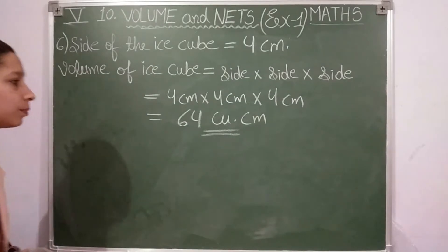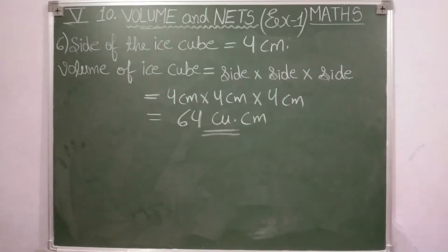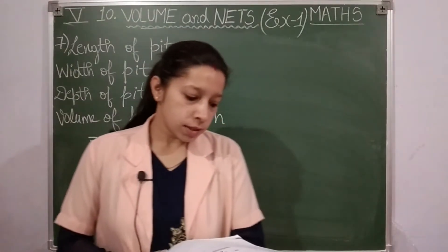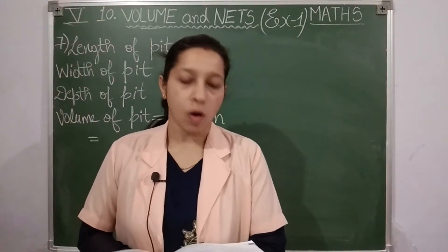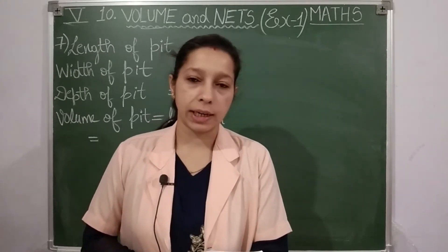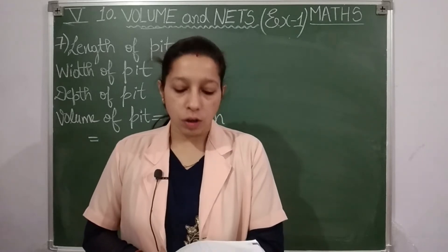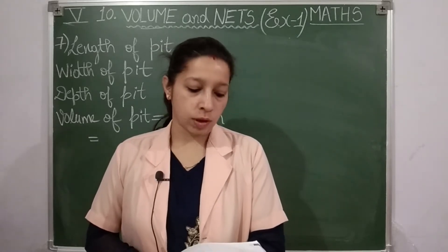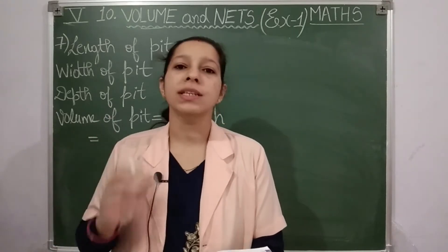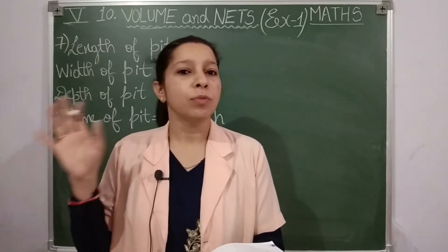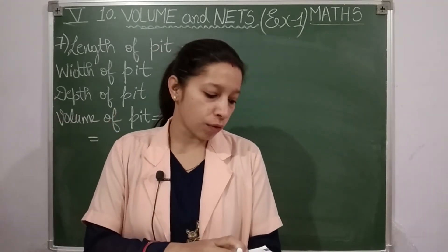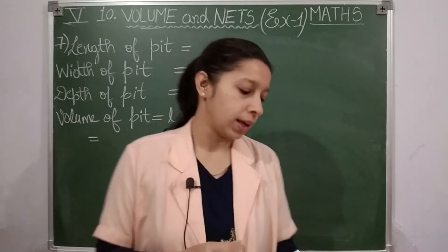Note that down, then we will see question number seven. A pit is seven meters long, five point eight meters wide, and four point two meters deep. Find the volume of earth dug out. The length, breadth, and depth are given. Since depth and height use the same formula — length × breadth × height — we apply that here.